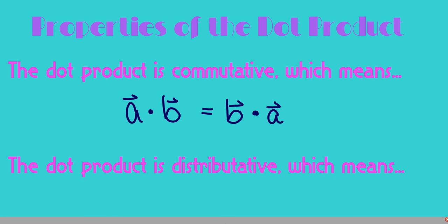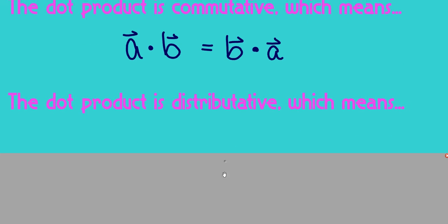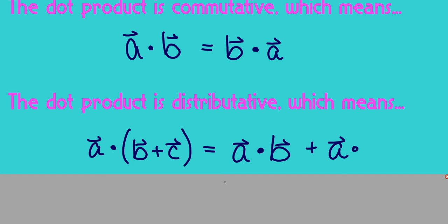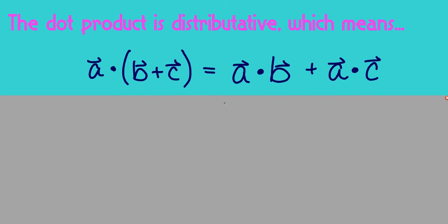The dot product is also distributive, which tells me if I have something like a dot b plus c, that I can distribute that a to both the b and c, so this would be equal to a dot b plus a dot c. And I'll just point out with order of operations, similar to with multiplication of regular numbers, you would evaluate the dot product prior to adding things together.